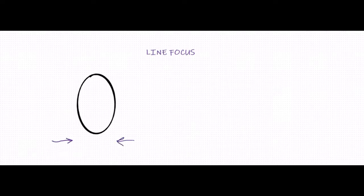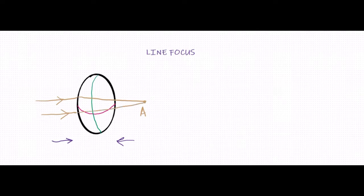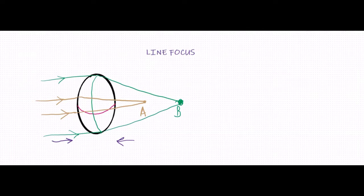Let us consider this astigmatic surface which is compressed from either side such that the horizontal meridian will be more curved compared to the vertical meridian. When rays of light pass through this horizontal meridian, they converge to a point A. When the same rays pass through the vertical meridian, they come to a point B which is present behind A, because the power of the vertical meridian is less as it is less curved.